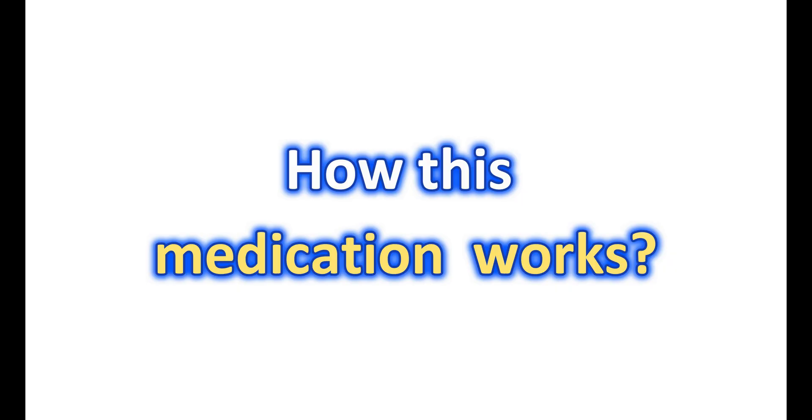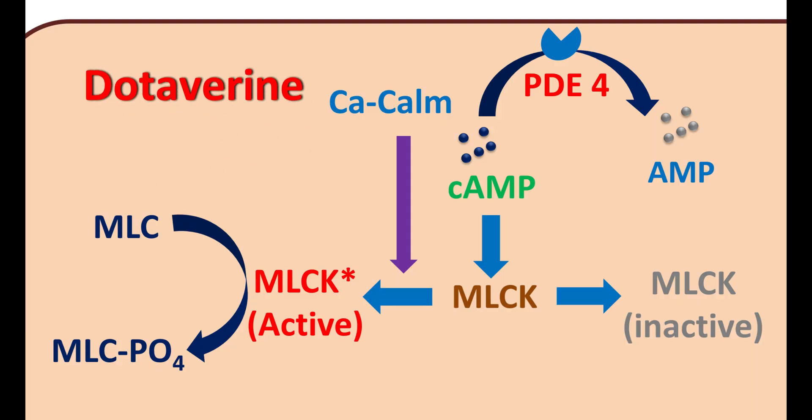Now, let us see how this medication works. Drotavarine is a phosphodiesterase 4 inhibitor. This is one of the metabolic enzymes responsible for metabolism of intracellular cyclic AMP. Normally, cyclic AMP plays an important role as a secondary messenger in mediating functions of many cells including smooth muscle. When cyclic AMP levels are elevated in the smooth muscle, it can produce relaxation of the smooth muscle. However, this action is mediated by a different mechanism in the smooth muscle.